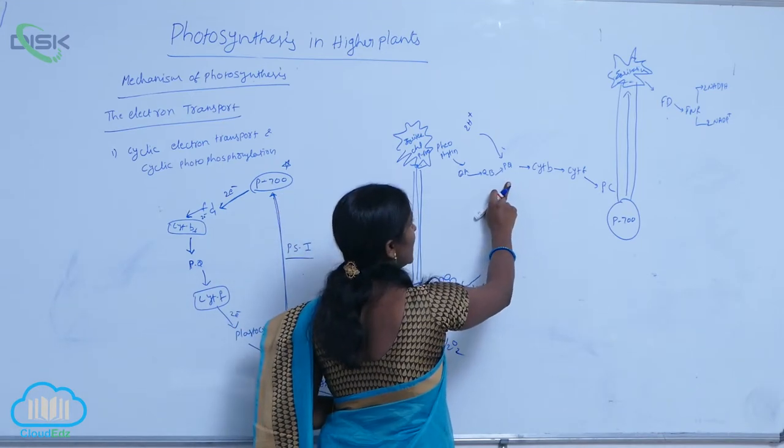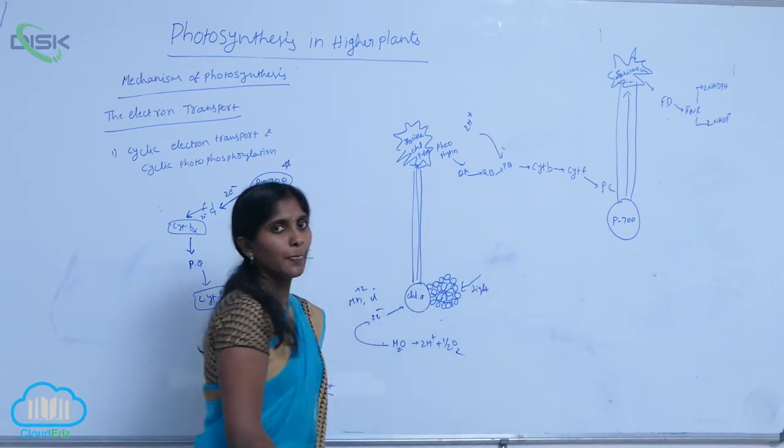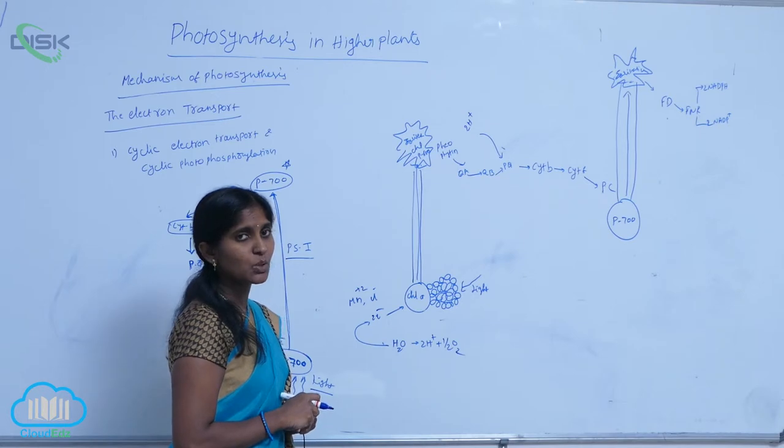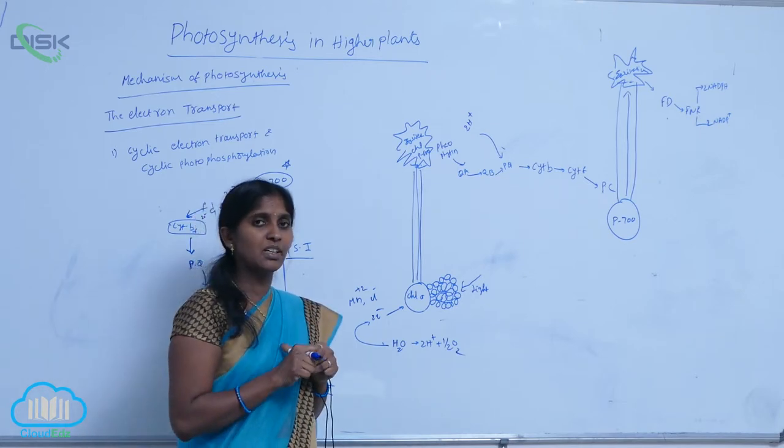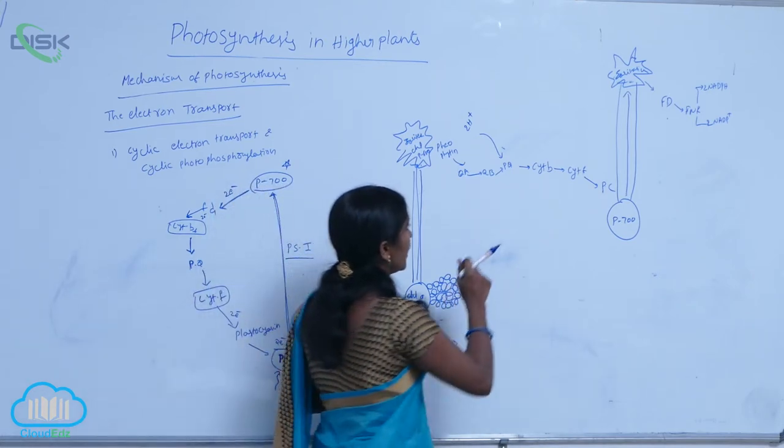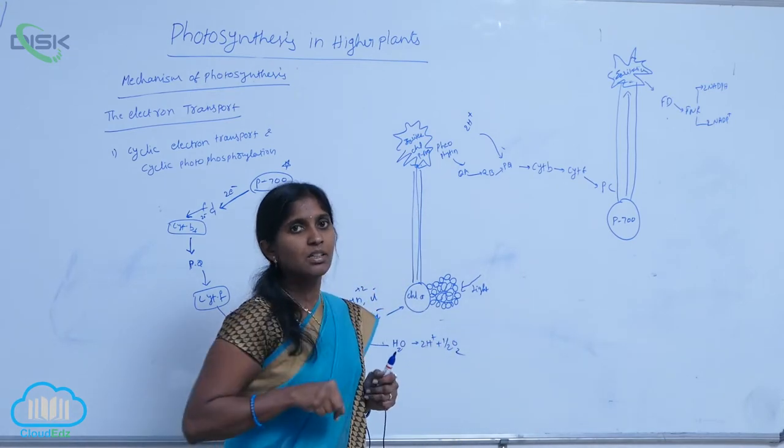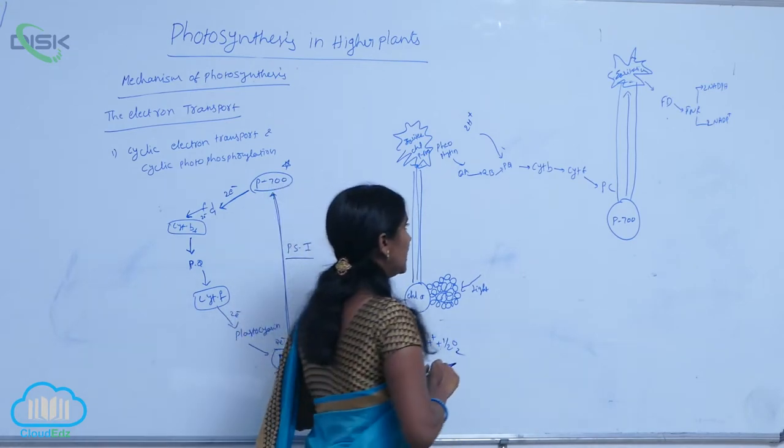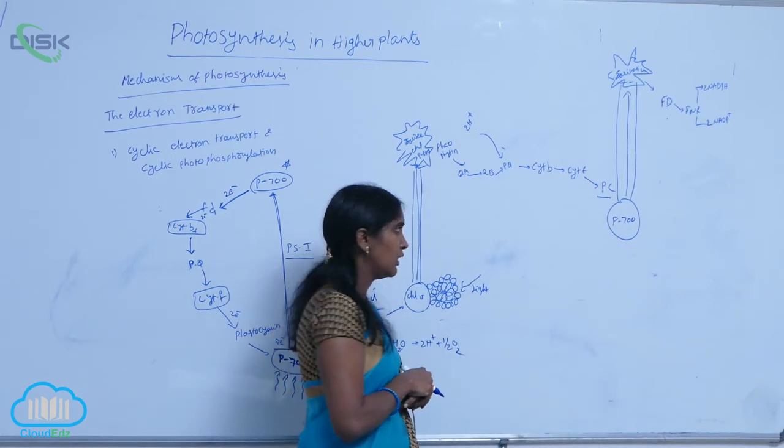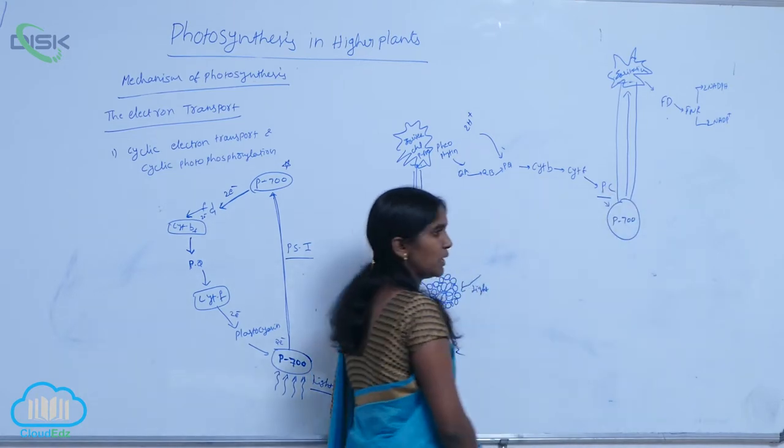Here, up to here the electrons are reached. Between pheophytin and cytochrome B, there is a plastoquinone cycle. In the plastoquinone cycle, again reduction and oxidation reactions are carried out. Among these cytochrome oxidants, the electrons are transmitted. Finally, they reach the plastocyanin. Then from plastocyanin, they reach P700.